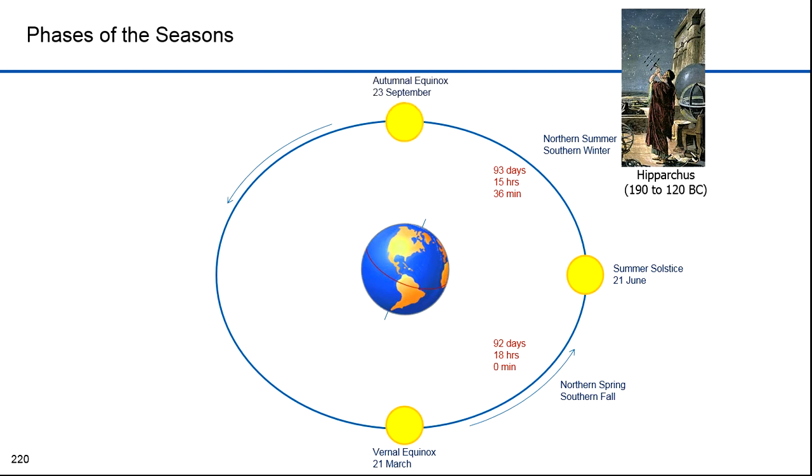Next is the autumnal equinox. It's on 23 September. Here, like the vernal equinox, the day is the same length as the night. It marks the beginning of the fall in the north and the spring in the south. Notice that fall in the north is much shorter than spring and summer, 89 days, 20 hours and 38 minutes.